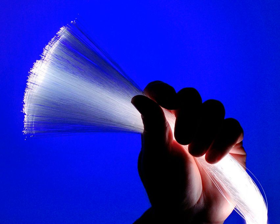Some special-purpose optical fiber is constructed with a non-cylindrical core and or cladding layer, usually with an elliptical or rectangular cross-section. These include polarization-maintaining fiber and fiber designed to suppress whispering-gallery mode propagation. Polarization-maintaining fiber is a unique type of fiber that is commonly used in fiber-optic sensors due to its ability to maintain the polarization of the light inserted into it. Photonic crystal fiber is made with a regular pattern of index variation often in the form of cylindrical holes that run along the length of the fiber. Such fiber uses diffraction effects instead of or in addition to total internal reflection, to confine light to the fiber's core. The properties of the fiber can be tailored to a wide variety of applications.